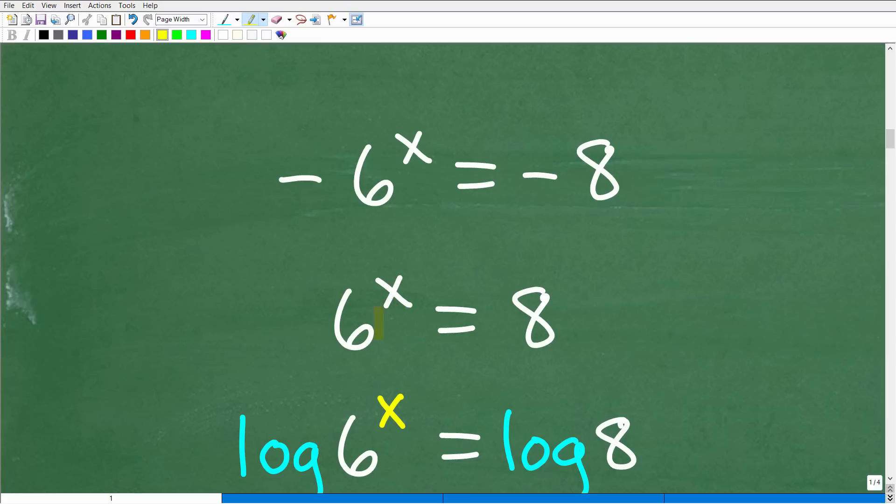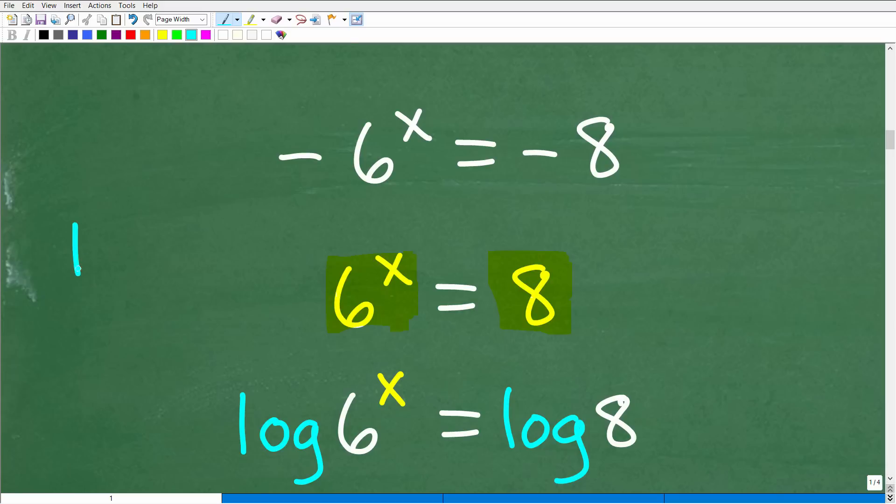Now, at this point, we are ready to take the log of both sides. Now, this is a pretty simple setup. There's certainly much more sophisticated, complex exponential equations, but effectively, this is like the first step. So now that we have one power on one side of the equation and one number, we're ready to take the log of both sides. Now, basically, you could use any log, any base that you want to use in terms of logarithm. In other words, we could take the ln of both sides.